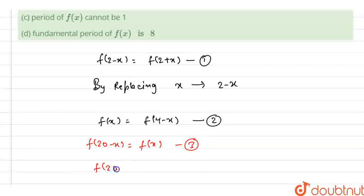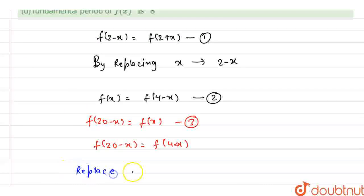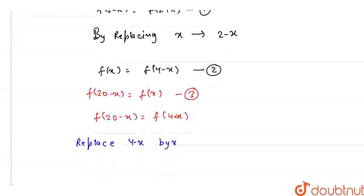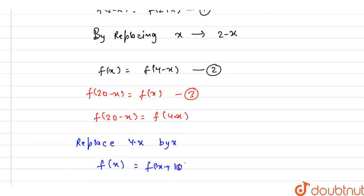From here we can say that f(20 − x) = f(4 − x). Now, if we replace (4 − x) by x, then f(x) becomes equal to f(x + 16).